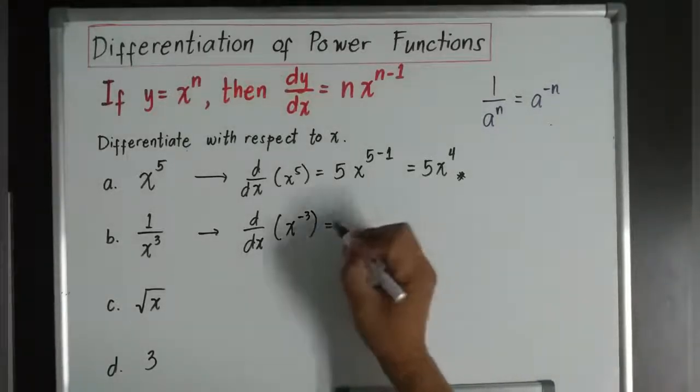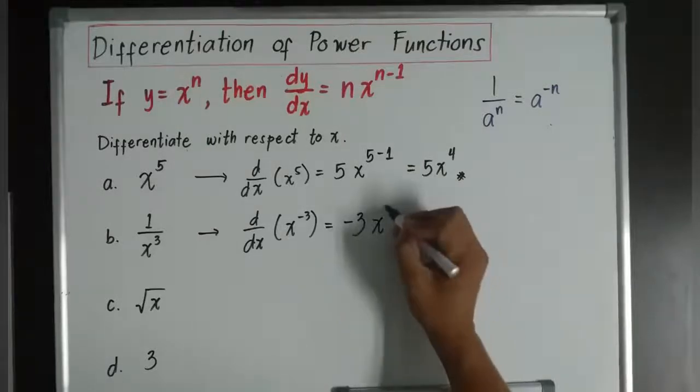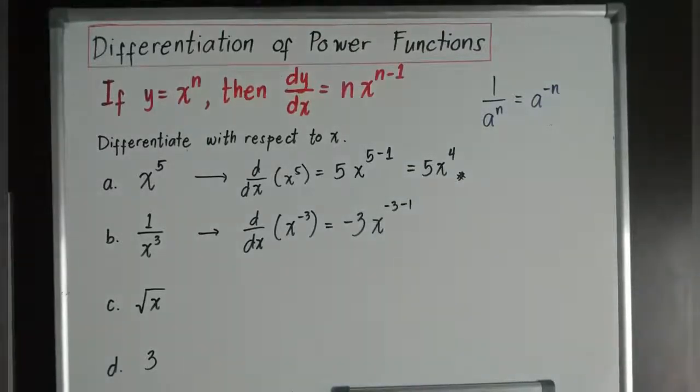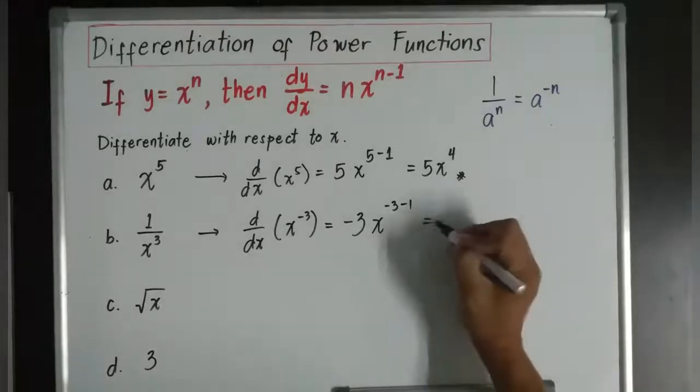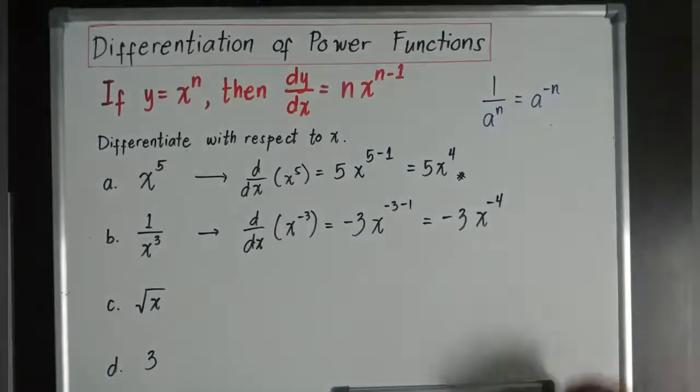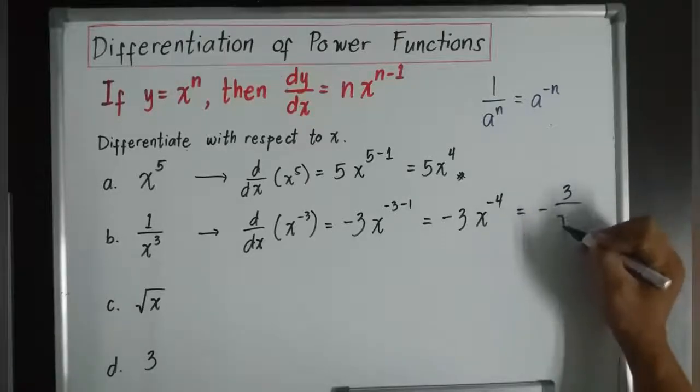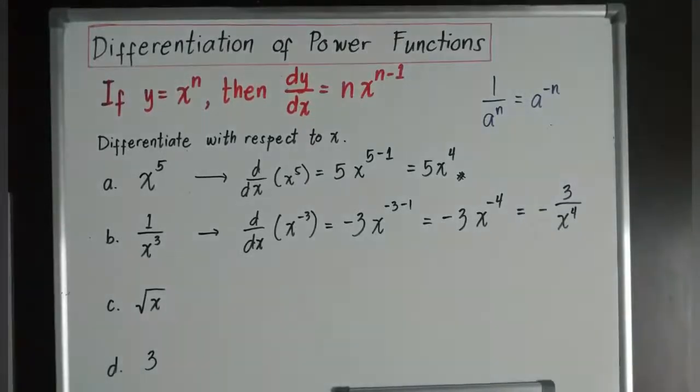So the laws of indices, how are we going to do this? It's just basically equals to get the index, which is negative 3, so negative 3. Multiply it with the x to the power of negative 3 minus 1. Thus, it will now be equal to negative 3x to the power of negative 4, which is also, I can leave my answer like this, but I want to make it a little bit look nice. So it will become negative 3 over x power 4.